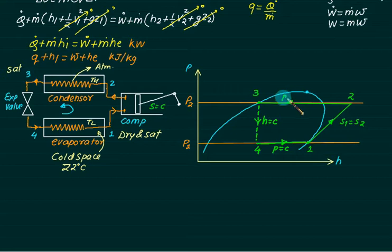And condenser, the work required to compressor is two minus one. Two processes are constant pressure, one process is isentropic and one process is isenthalpic. This one is called as vapor compression refrigeration cycle.